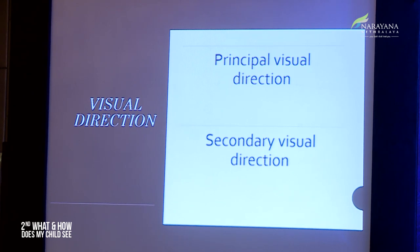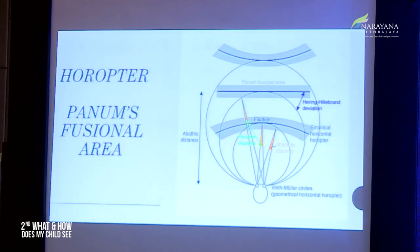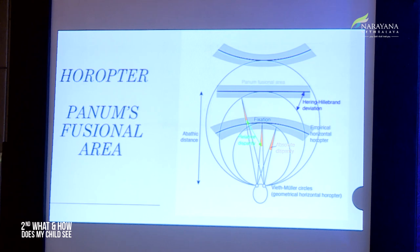There are principal and secondary visual directions. The principal visual direction is the direction at which the fovea projects, and the secondary visual directions are the directions at which all other corresponding retinal points project. The horopter is actually the fusion of all these fixation points. Two corresponding retinal points can image objects at different distances, and the fusion of all these distances gives rise to something called the horopter.